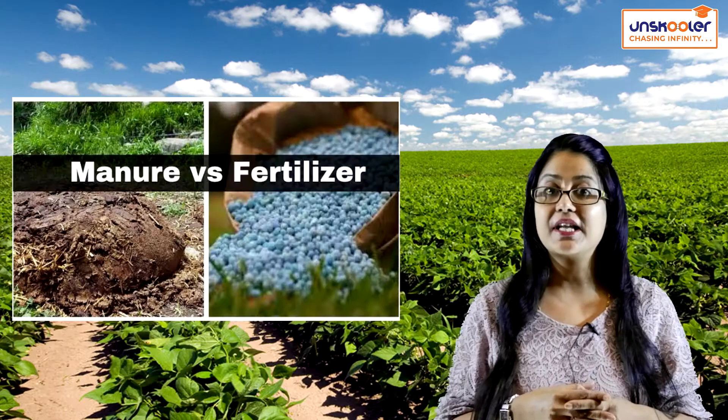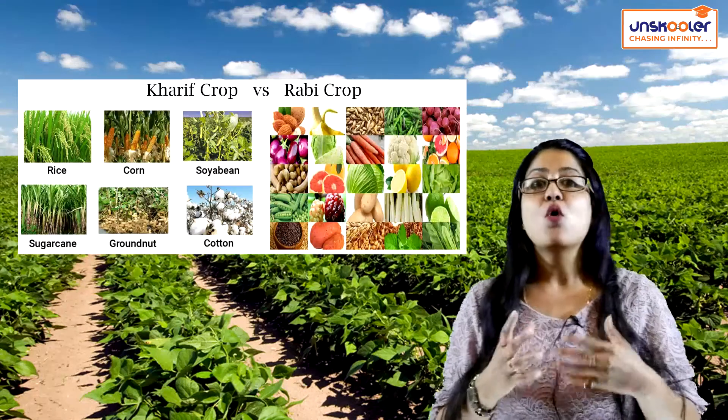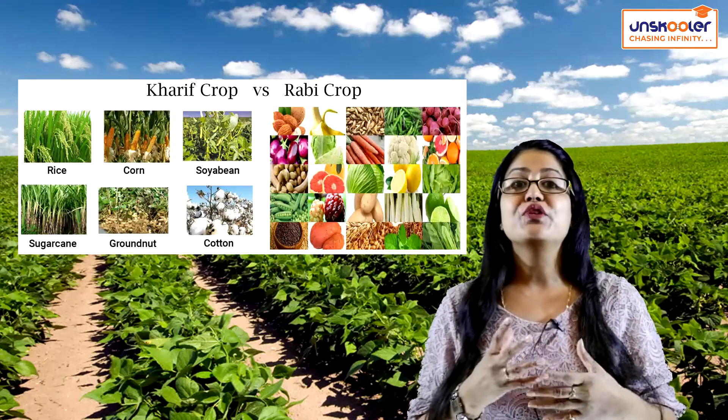Let's get started. Our first chapter is Crop Production and Management. From this chapter, you will be getting two differences: one is Kharif and Rabi, and the second one is Manure and Fertilizer. So let's understand what the difference is.